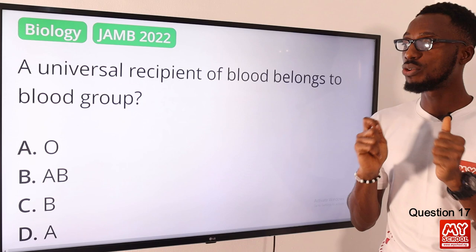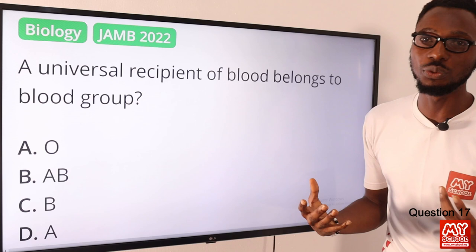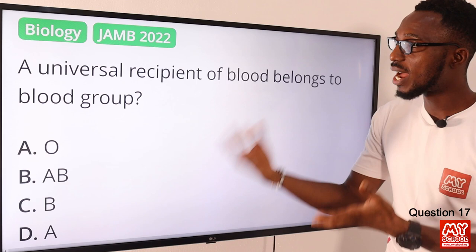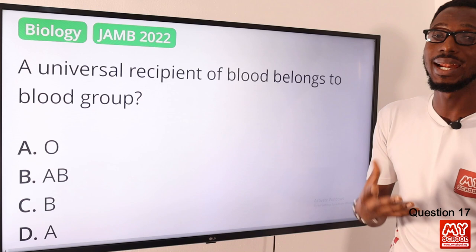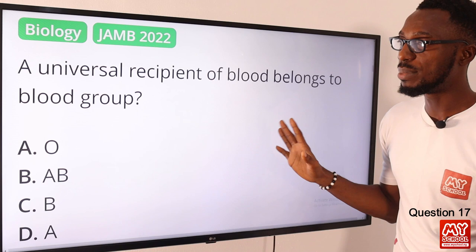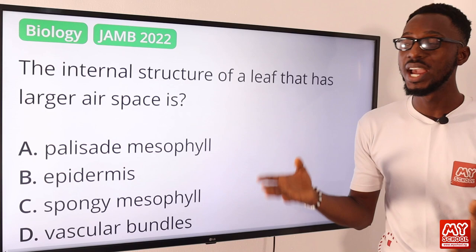Question seventeen: a universal recipient of blood belongs to which blood group? The ABO blood groups are A, B, AB, and O. The universal donor is group O — they can donate to every other group. The universal recipient is group AB — they can receive from every other group without agglutination or blood clotting due to mismatching. The correct option is option B — AB.